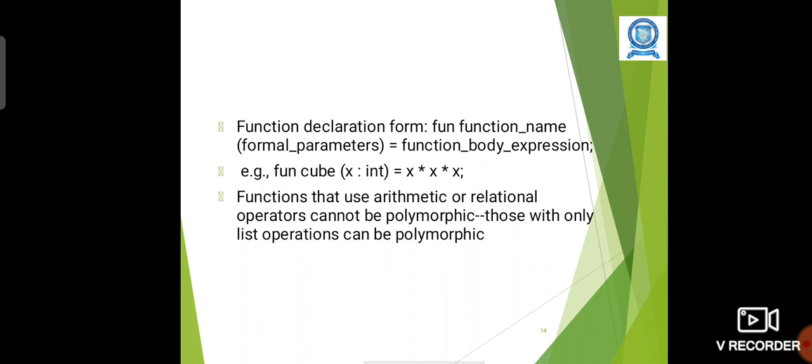For example, fun cube (x : int) = x * x * x. Here, cube is the name of the function, x is the formal parameter. Function body expression is the formula or expression which will be evaluated for the particular function. Functions that use arithmetic or relational operators cannot be polymorphic.